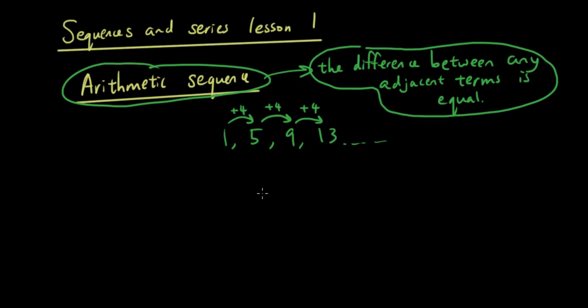Now the way that we write down how to calculate this difference is we call it D, which stands for difference. D is equal to Tn minus Tn-1. So what does this formula mean?